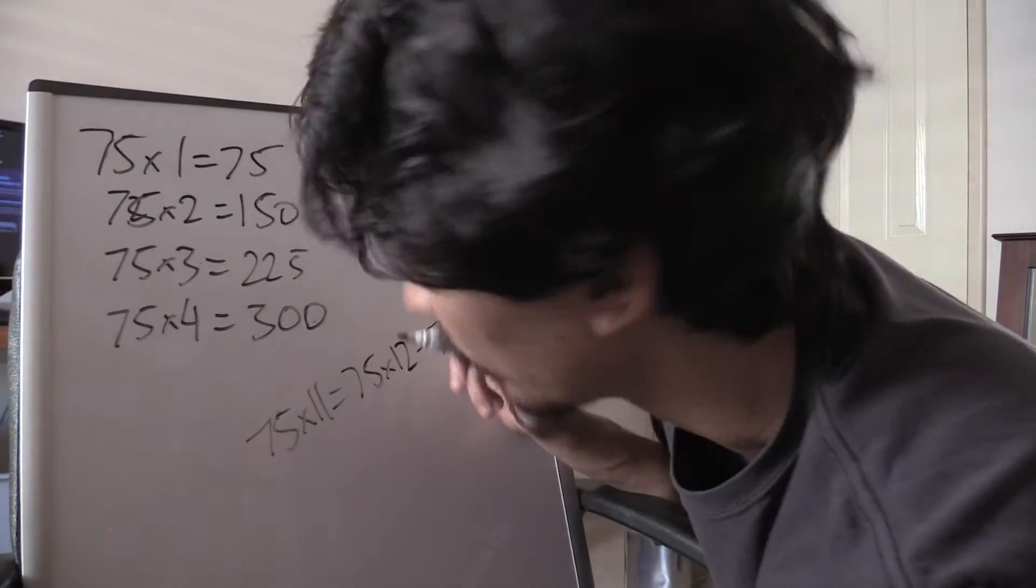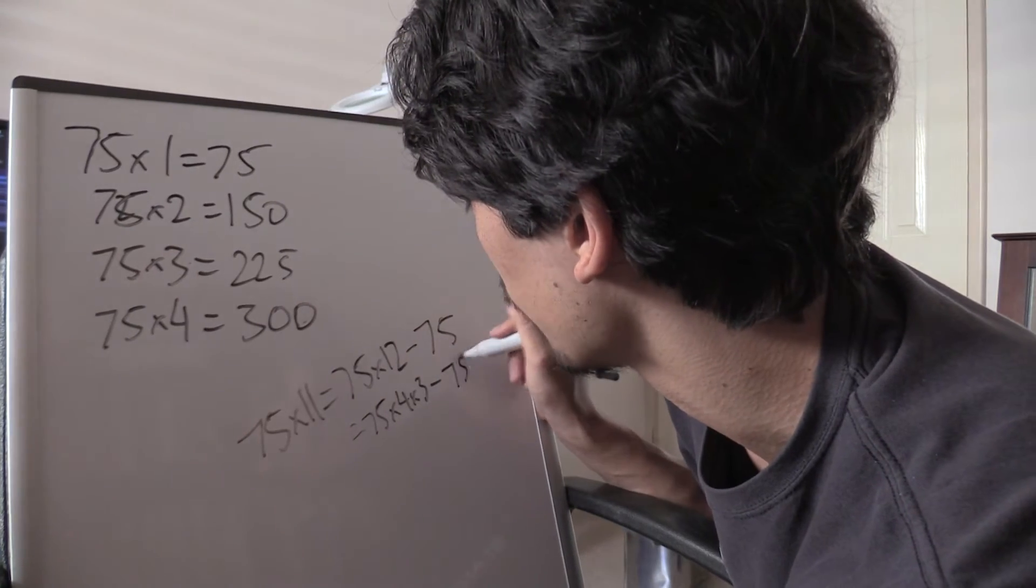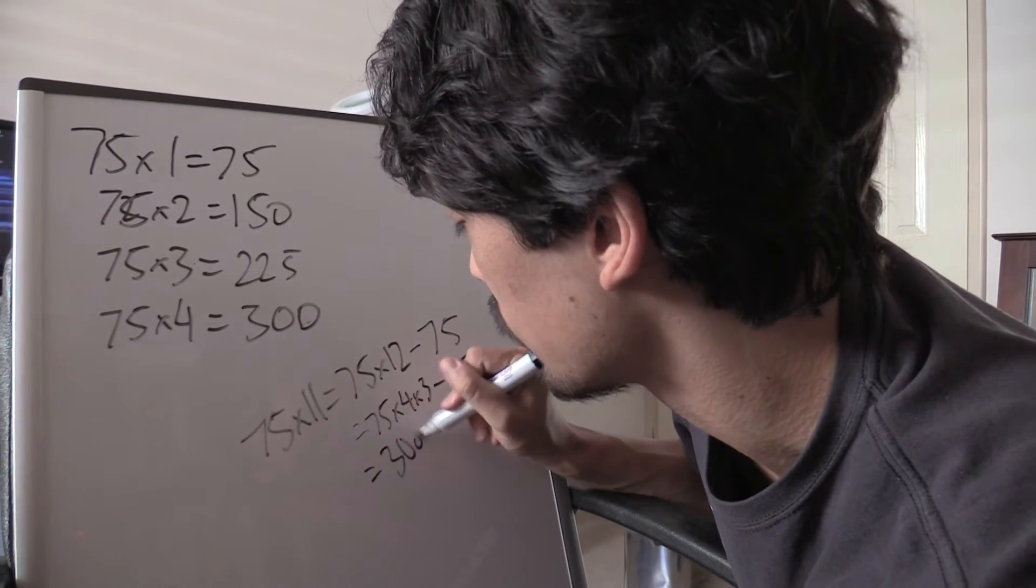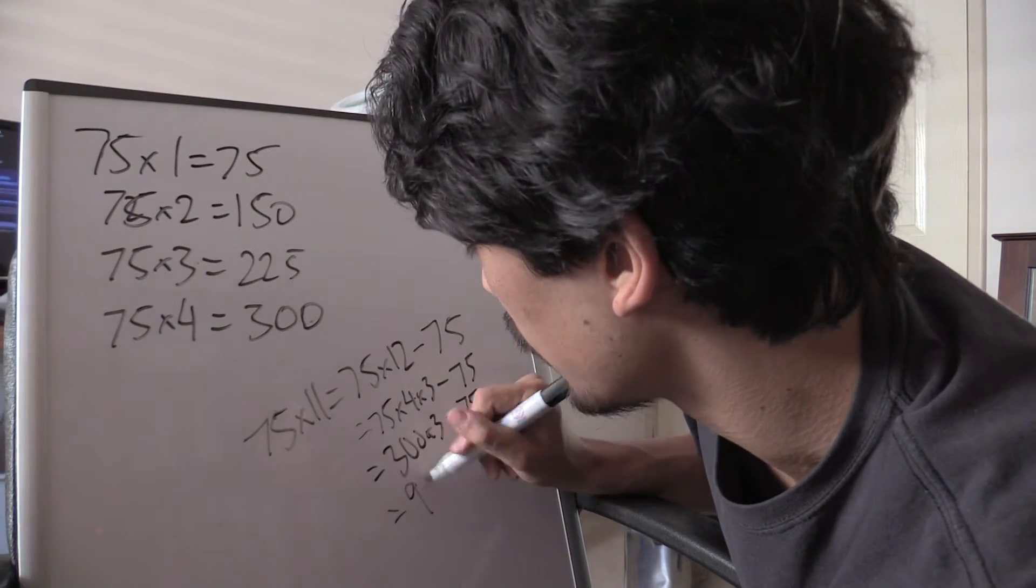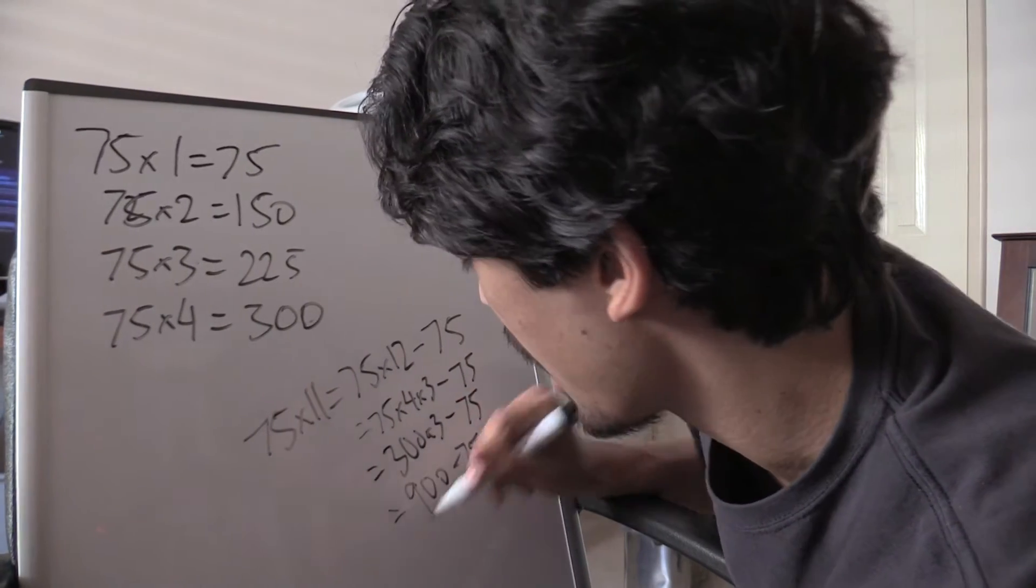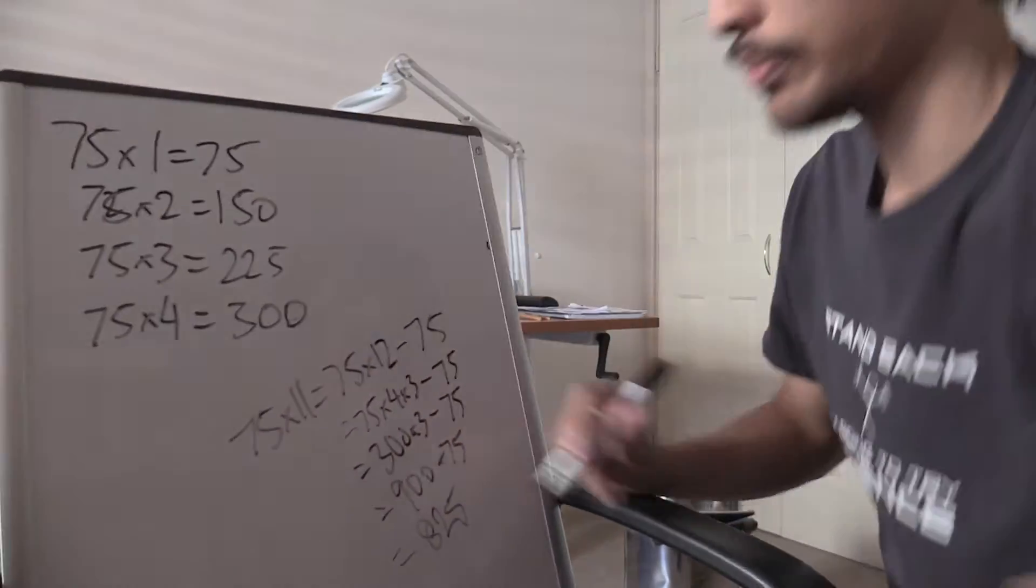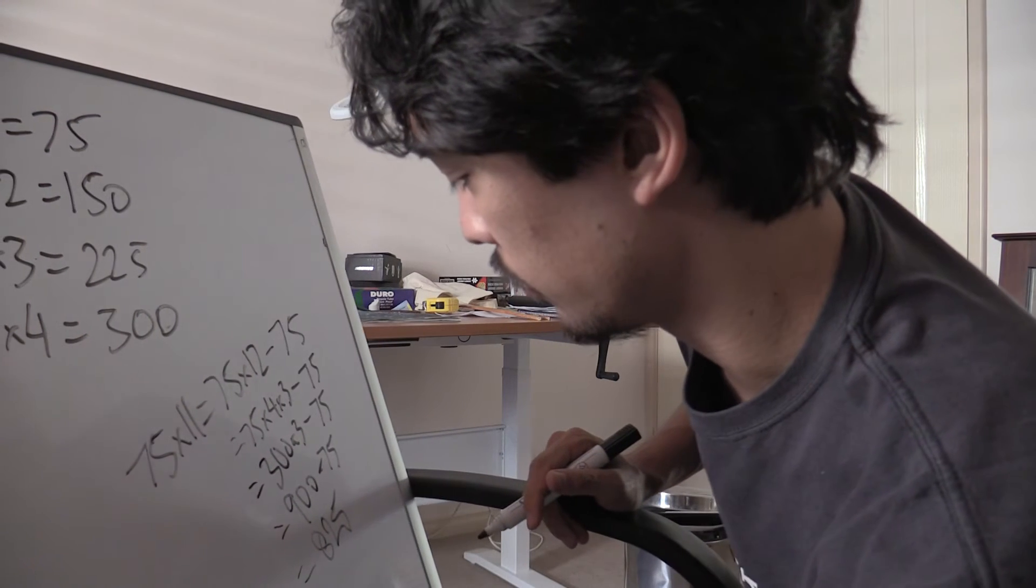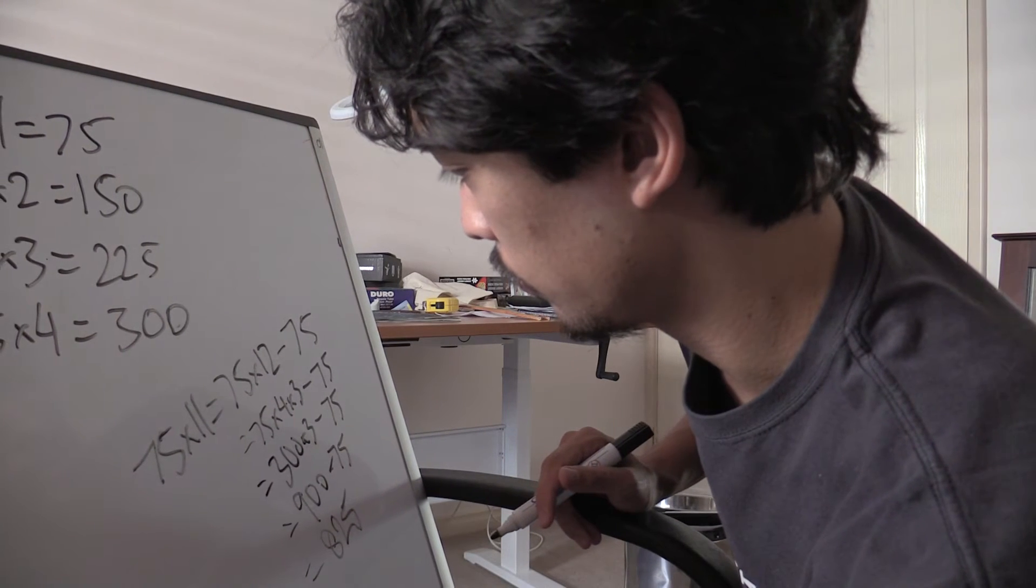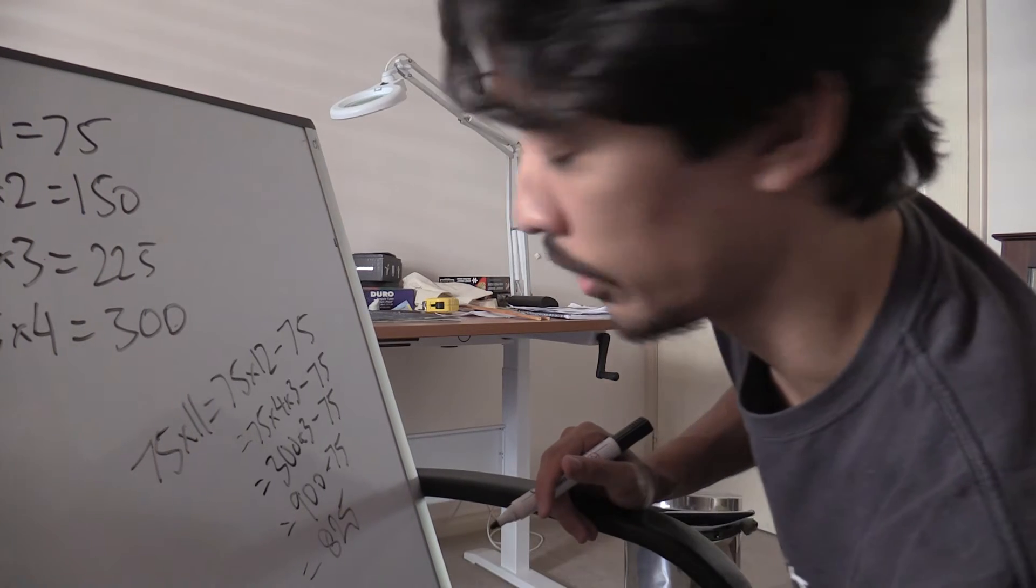Which equals 75 times 4 times 3, take away 75, which equals 300 times 3, take 75, which equals 900, take 75, which equals 825. Wait, wait. Yes, yes. That's correct, that's correct.